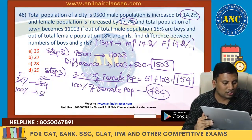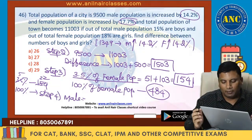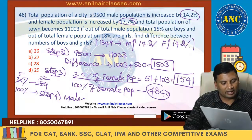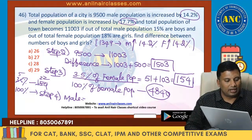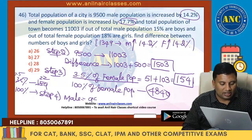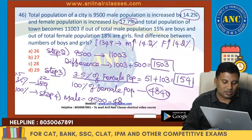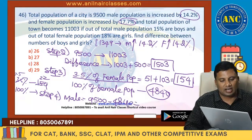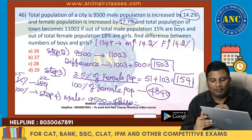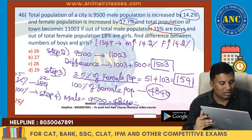Step number 4: male population will be 9,500 minus 4840, which is 4660. Once you got the male and female population, what do you require? 15% of male population — it is boys. And 18% of female population — it is girls. Subtract them and you will get the answer.